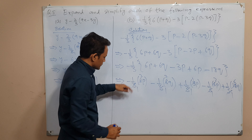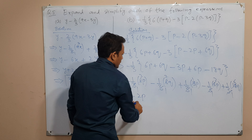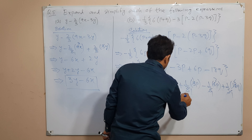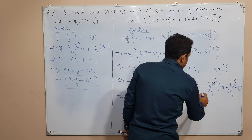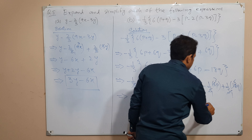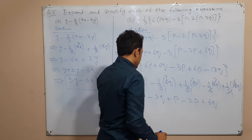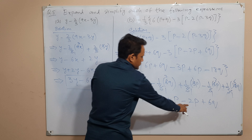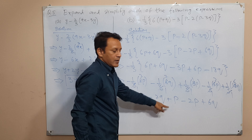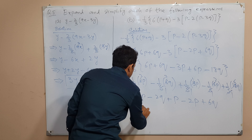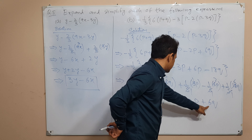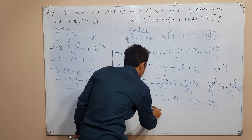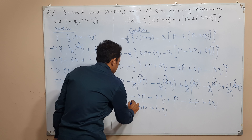तो अब हमारे पास क्या बचा: negative 2p, और negative 2q, फिर plus p आएगा, और minus 2p, और plus 6q। तो अब हम p वाली terms को देख लेते हैं: minus 2p, plus p, और minus 2p। Minus 2p और minus 2p equals minus 4p, और उसमें positive p को add करें तो minus 3p। और negative 2q plus 6q: positive का number बड़ा है, तो 6 minus 2 equals plus 4q। तो answer है minus 3p plus 4q।